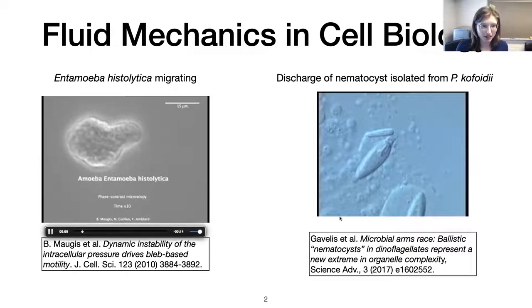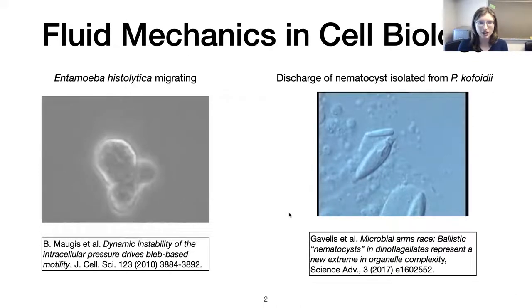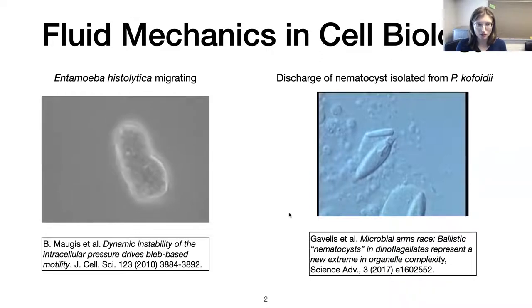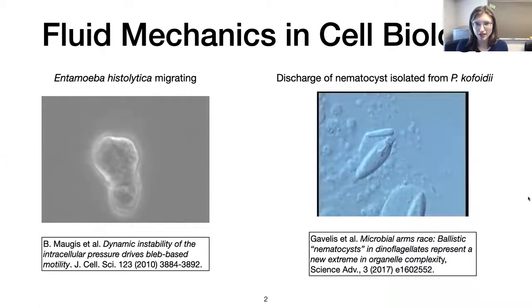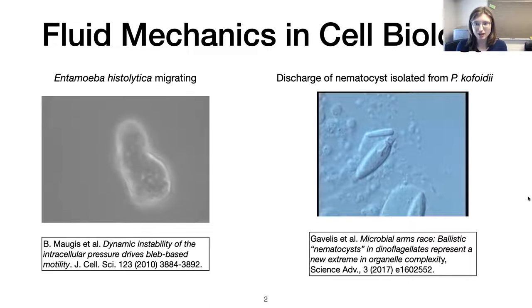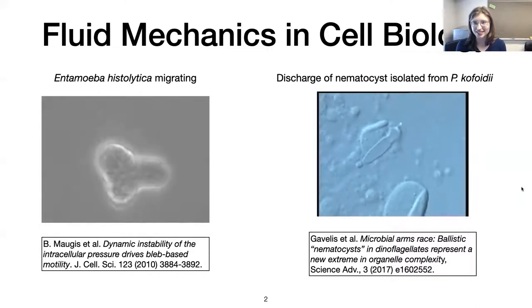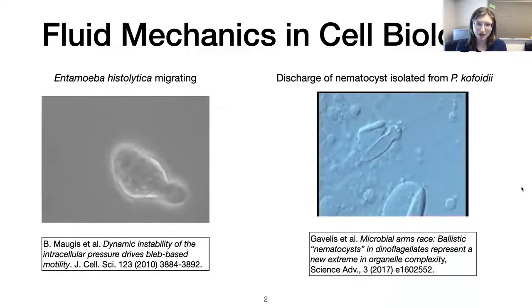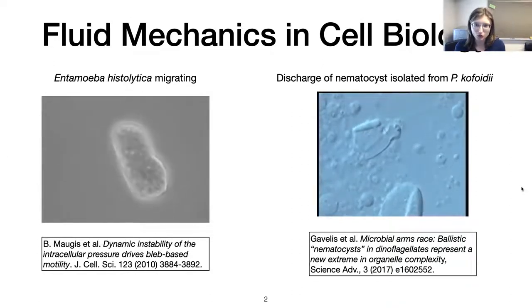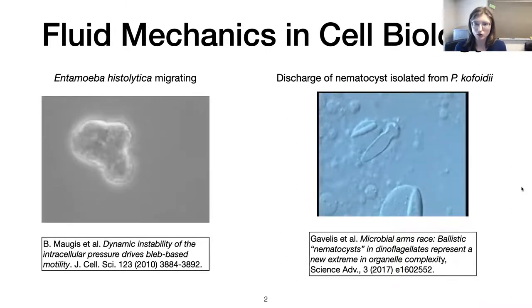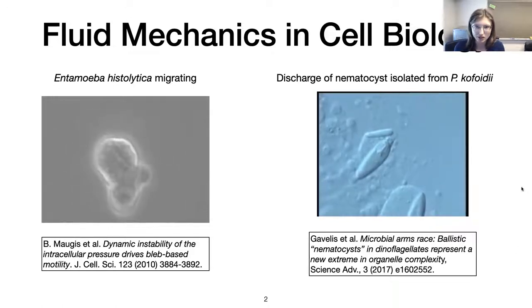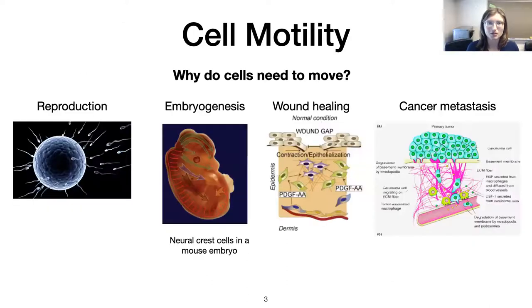One example is this amoeba, Entamoeba histolytica, which is a parasite that can cause a lot of issues. You can see it has this cytoplasmic streaming type of motion as it moves around on the glass coverslip. Another example is a plankton cell in the ocean that has an organelle that fires like a harpoon to capture prey — you can see the little harpoon firing. That's similar to a nematocyst, like getting stung by a jellyfish, which is a higher Reynolds number problem.